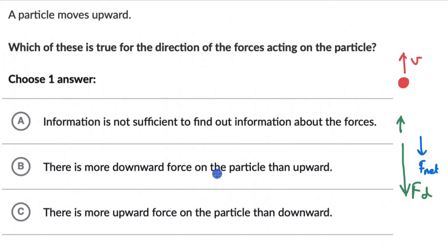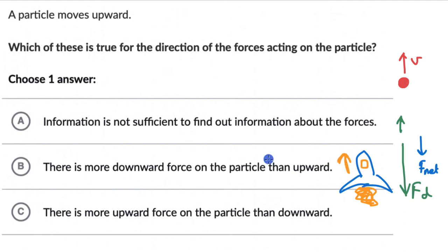But think about the case of a rocket. If there is a rocket with exhaust gases coming out, the force due to the exhaust gases will be in the upward direction, which will be more than the force due to gravity in the downward direction. So the net force is in the upward direction, and the motion is also in the upward direction. So option B is not necessarily always true for the case when the particle is moving upward — it will not always be true, so this is wrong.